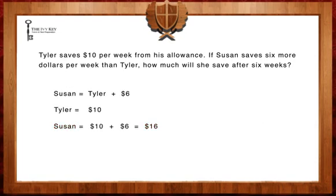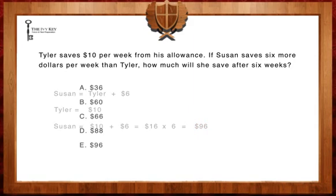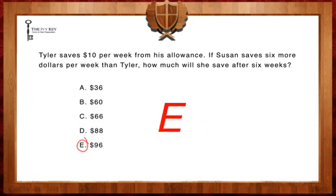In order to find out how much she has saved after 6 weeks, we're going to multiply $16 by 6. $16 times 6 equals $96. Susan saves $96 after 6 weeks. Therefore, the answer is E.